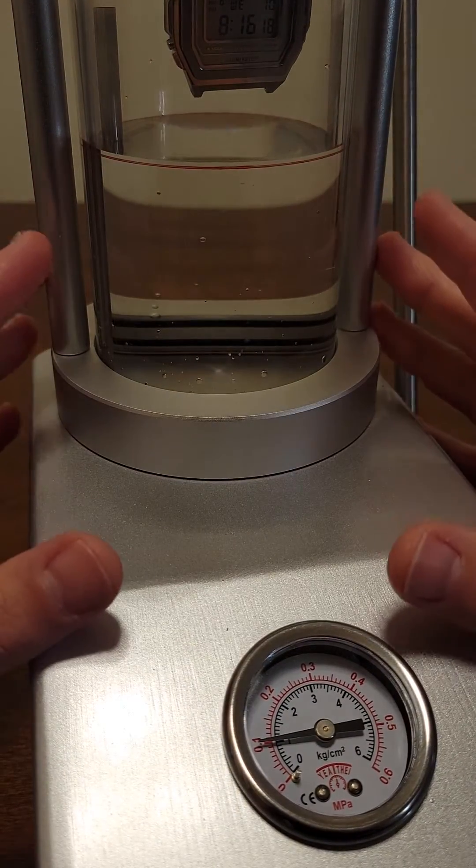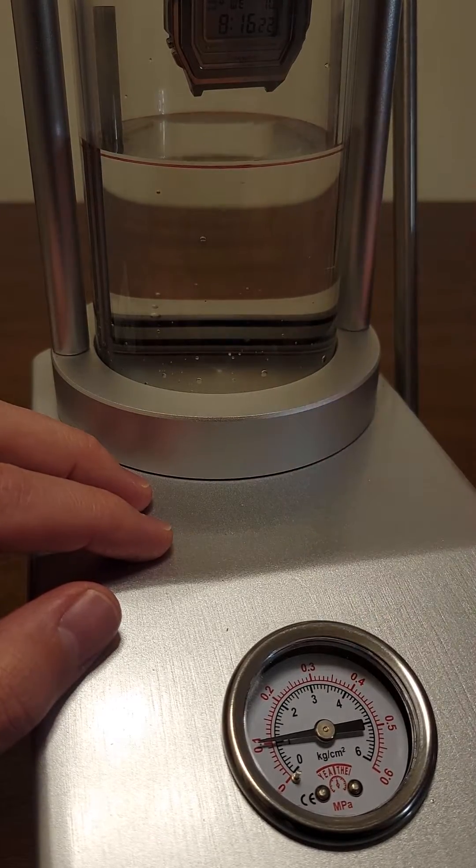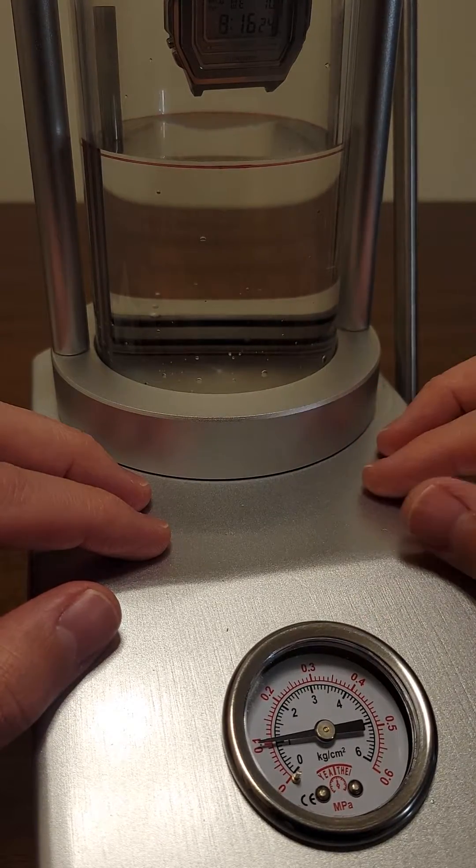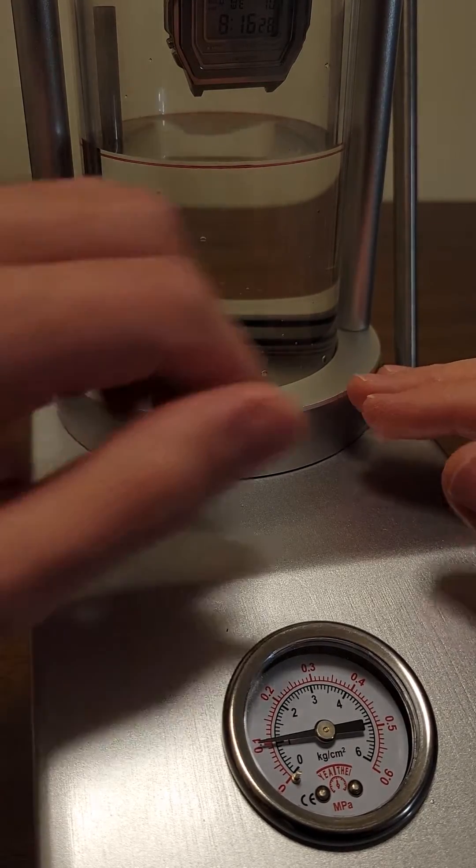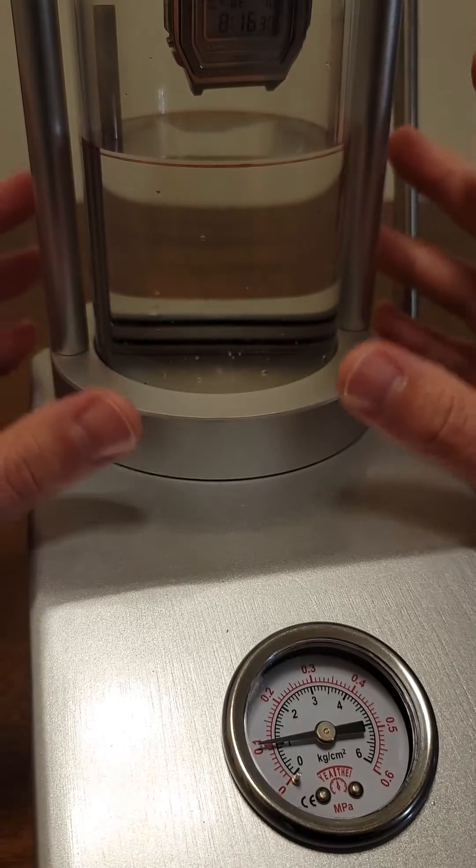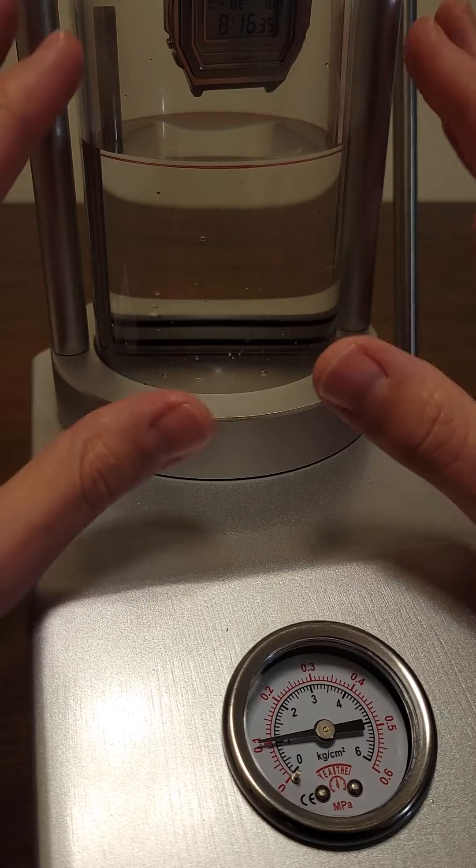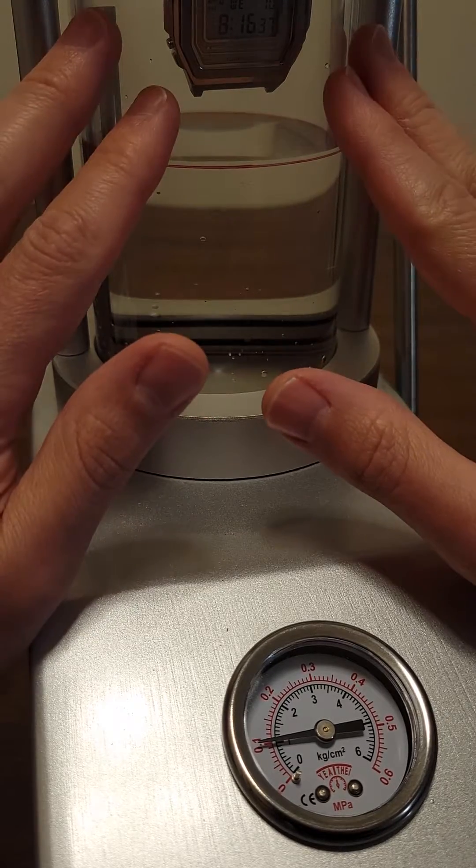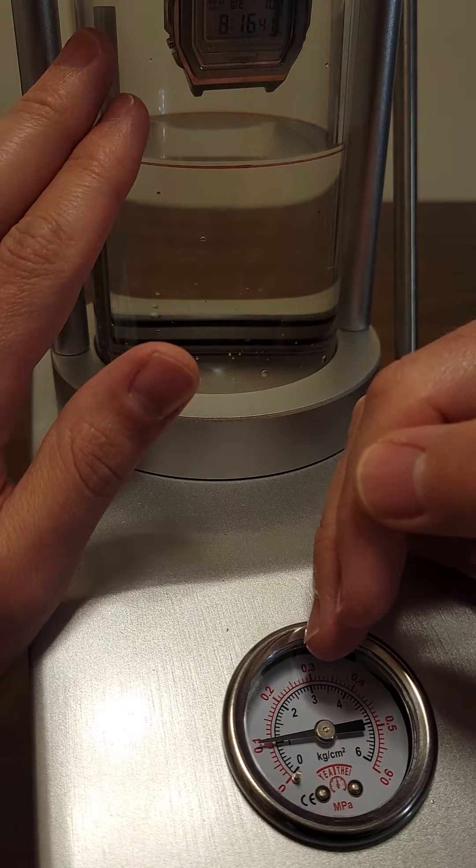I'll also talk about what you're actually testing with one of these testers. This is one that you'll see online or on eBay. The process is to kit the watch in the chamber here and get everything tightened down.